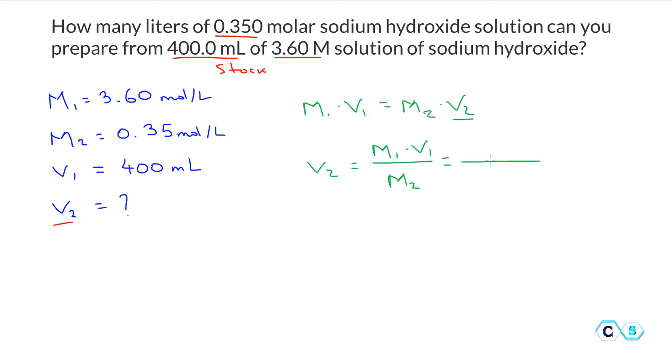So at this point we just need to put the numbers. M₁ is 3.60 mols per liter multiplied by the volume which is 400.0 milliliters, and we're going to divide this by the final concentration which is 0.350 mols per liter. Cancel the units of the concentration and our answer is equal to 4114.2 milliliters.